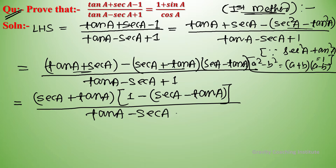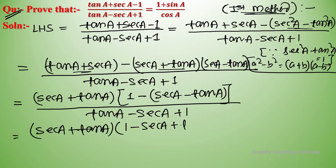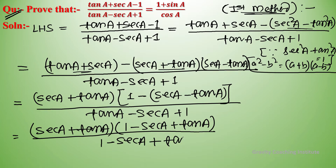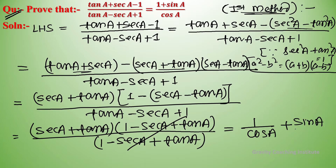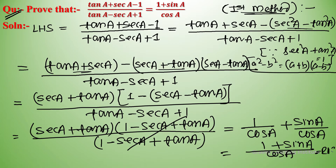After simplification, with tan A minus sec A plus 1 in the denominator, the common bracket cancels. We are left with 1 upon cos A plus sin A upon cos A, which equals 1 plus sin A upon cos A, equal to RHS. Hence proved.